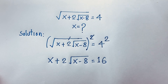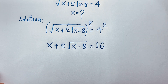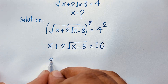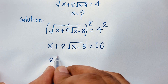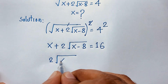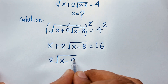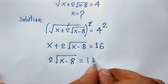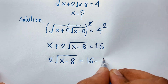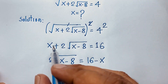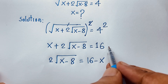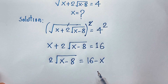Now in this math equation, you can see easily here: 2 square root of (x minus 8) is equal to 16 minus x. I just move this x to this side, so it will be negative x.